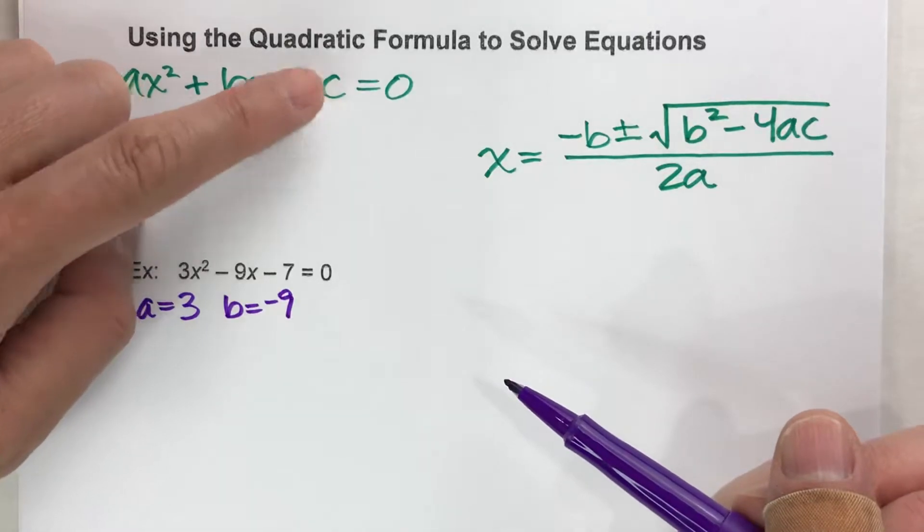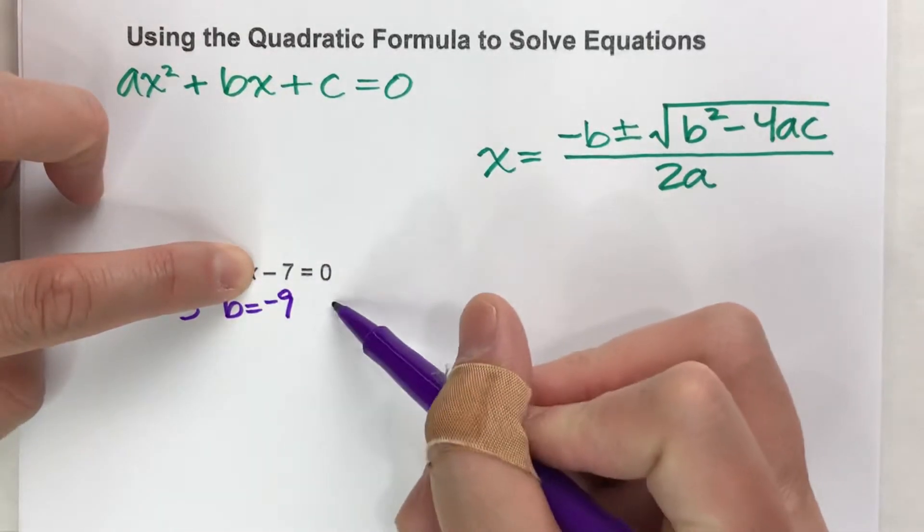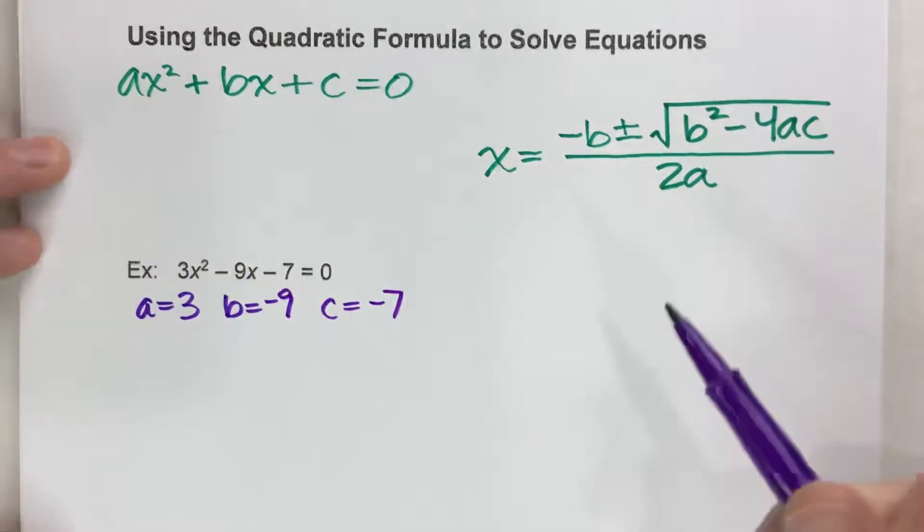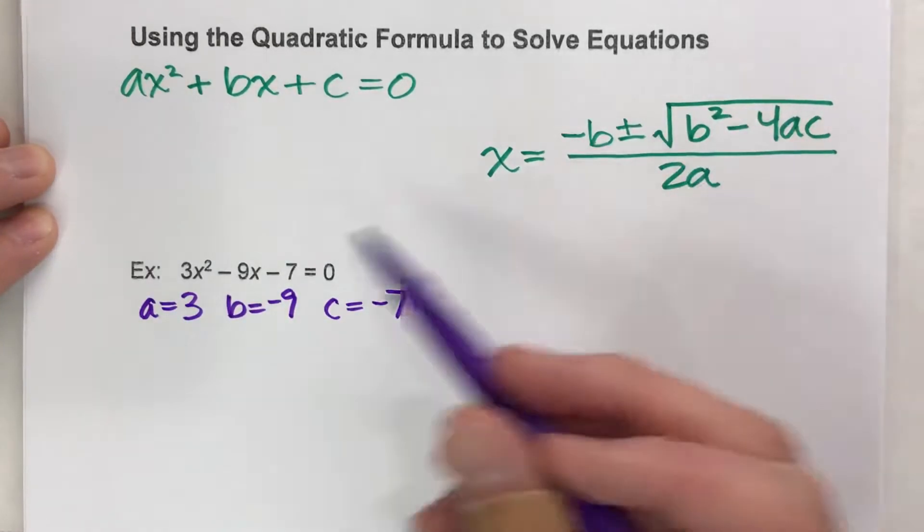And then the number at the end without a variable next to it, your constant is c. In this case, c is negative 7. So, now that we've figured all that out, now we can use this formula.